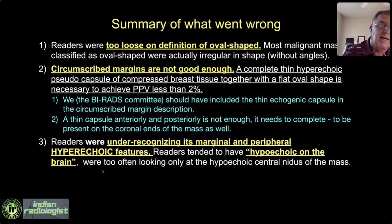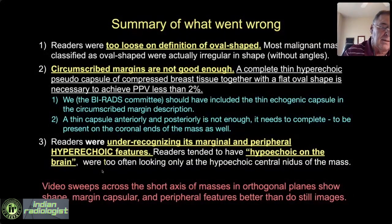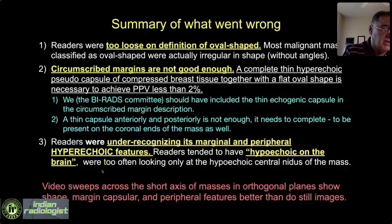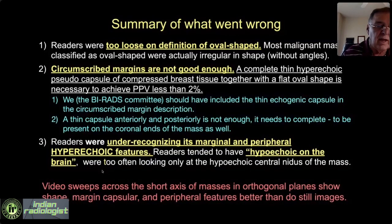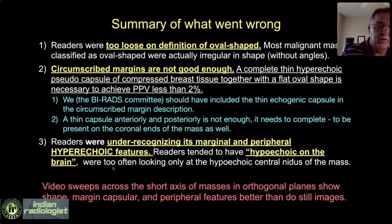Unless radiologists scan themselves, they're often given only two views through the widest part of the lesion by their sonographers. We found that orthogonal video sweeps — starting in the soft tissues on one side of the nodule and going across to the other — showed the answer where the still images obtained by the sonographer did not. If you're not actually doing the scan yourself, you should be looking at video loops, not still images.